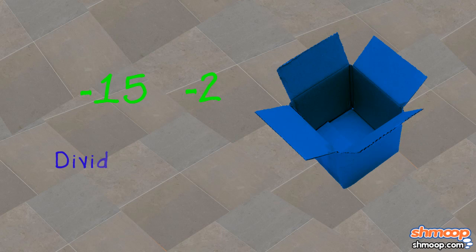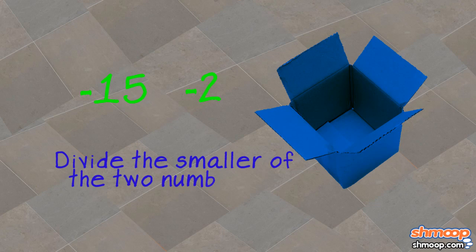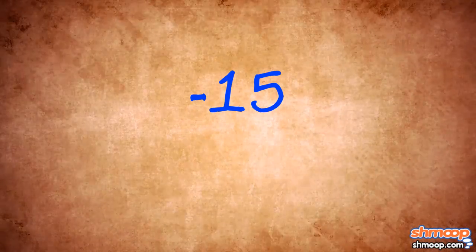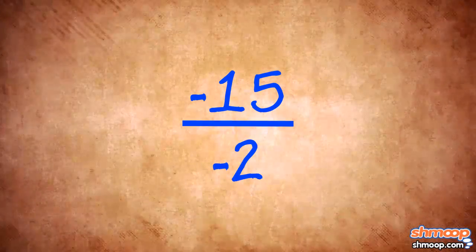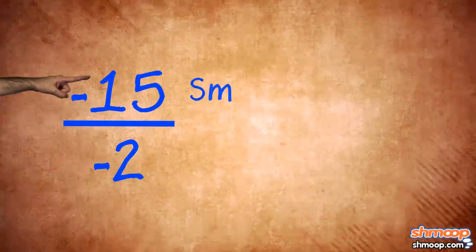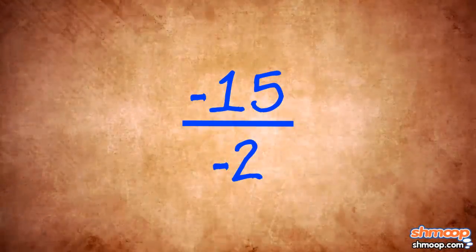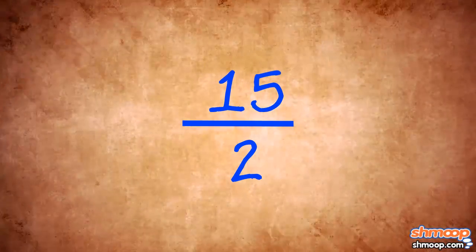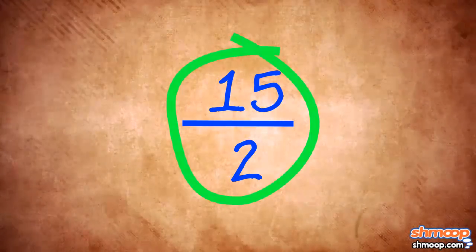Her instructions were to divide the smaller of the two numbers by the bigger one. So, she has to take negative 15 and divide it by negative 2, keeping in mind that negative 15 is actually the smaller number. Well, 15 divided by 2 doesn't reduce, so she gets 15 halves and the negatives cancel. So, the answer is positive 15 halves.